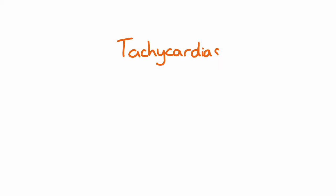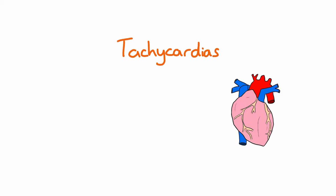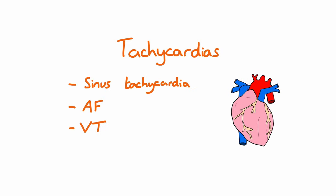You will commonly see ECGs that show tachycardia, or a heart rate above 100 beats per minute. We're going to have a look at some common tachyarrhythmia ECGs, specifically sinus tachycardia, atrial fibrillation, ventricular tachycardia and ventricular fibrillation.